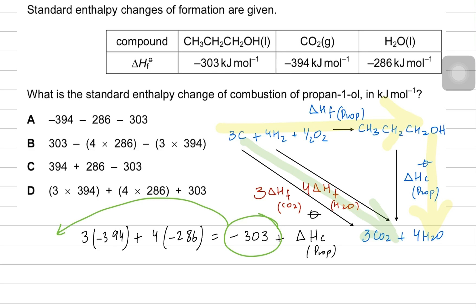Since 303 must be positive, options where it is negative are cancelled. It is either B or D. In option D the negative sign on the result is missing, so option B is the correct answer.